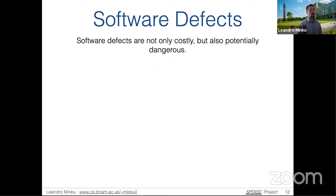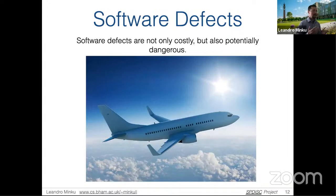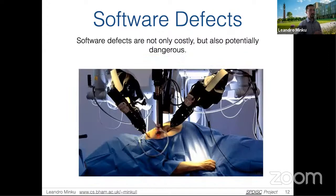Software defects are not only costly but also potentially dangerous, because software is really everywhere nowadays. People are talking about autonomous driving cars, which are essentially driven by software. But actually, software is already in our cars right now, and there have been several car recalls to fix software bugs — some potentially dangerous. Imagine a software defect in the software controlling an airplane, or a robotic arm operating on you — this could be really serious.